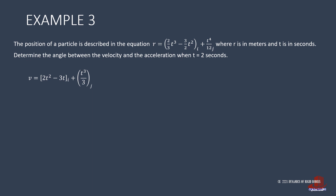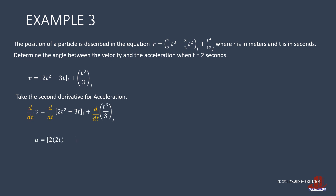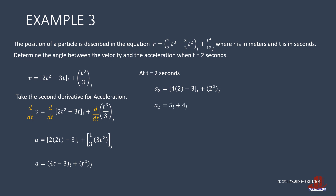For acceleration, take the derivative of the velocity equation. So dv/dt equals acceleration, which is equal to 2 times 2t (the derivative of t²) minus 3 for the i component, then (1/3) times 3t² for j. This simplifies as 4t minus 3 for i plus t² for j. At t equal to 2 seconds, acceleration becomes 5i plus 4j. The inclination is computed as the inverse tangent of 4 over 5, giving 38.66 degrees.